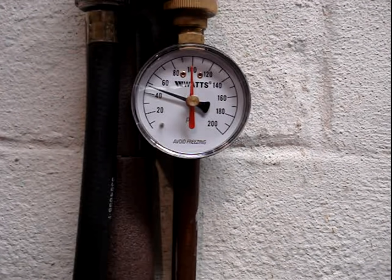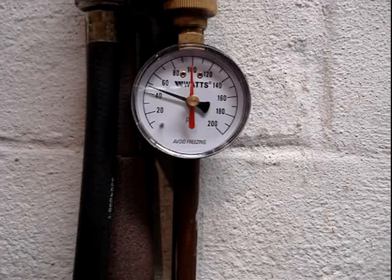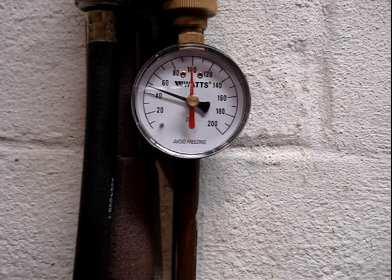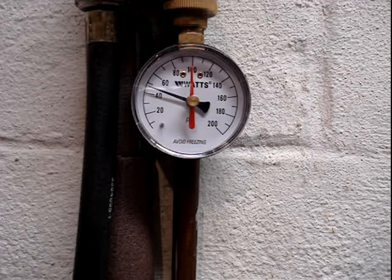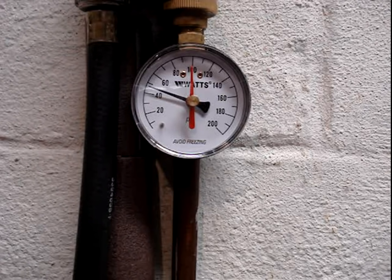The normal range for water pressure should be between 40 and 80 psi. Most communities have adopted plumbing codes that require a pressure reducing valve be installed if the municipal water supply pressure is greater than 80 pounds. This is an open system with a pressure reducing valve that has a bypass.